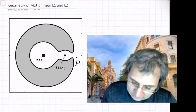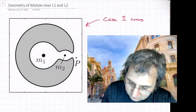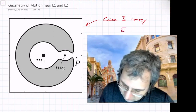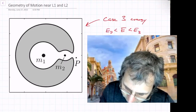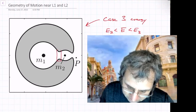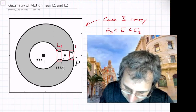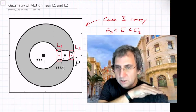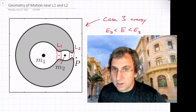Right now we're looking at what I call the case three energy — that's the three-body problem energy. This is where the energy is less than that of L3, but greater than that of L2. So you have these two bottleneck regions opening up near L1 and near L2, which are going to be points along the x-axis in the rotating frame, and that's kind of what I'm showing here.